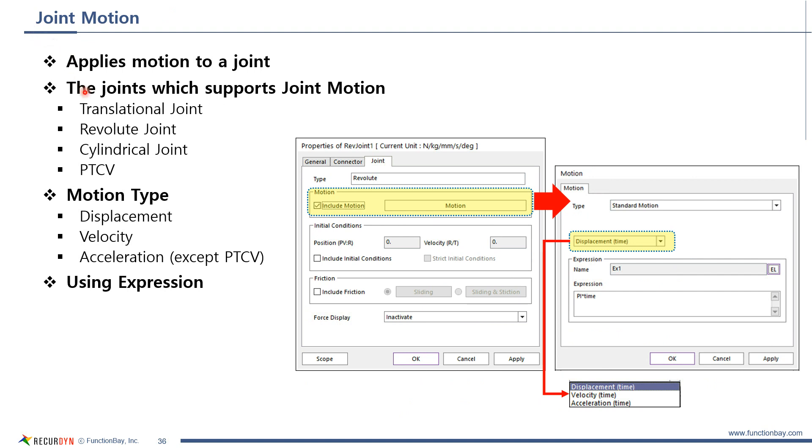Joint motion was introduced briefly in the starter kit. It applies motion to a joint. Then, eventually, the motion is applied to a body connected to the joint.